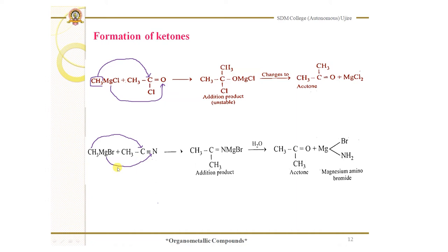There is another way to prepare ketones — by the action of cyanides on Grignard reagent. For example, methyl cyanide, which has a triple bond between carbon and nitrogen. The same type of addition takes place: CH₃ goes to the carbon, and MgBr goes to the nitrogen. There is a partial positive charge at carbon and partial negative charge at nitrogen due to the difference in electronegativities. When CH₃ goes to this carbon, a new bond is formed between carbon and CH₃. After the addition reaction, the triple bond becomes a double bond in the addition product.